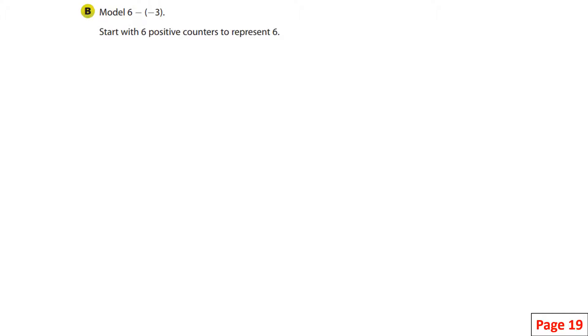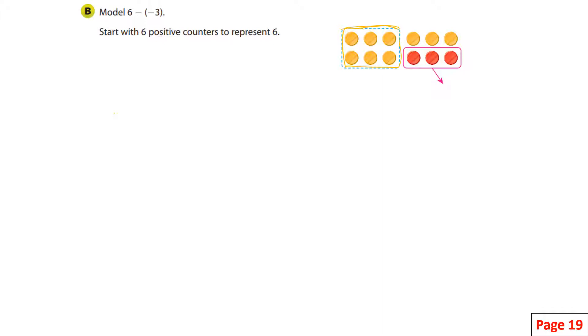Six take away negative three. Now this is a little bit tricky. We have six positives and we take away three negatives. So we start with six positives — here they are. From those six positives, we have to take away three negatives, but there are no negatives to take away.